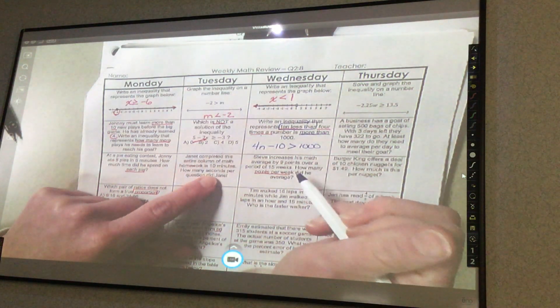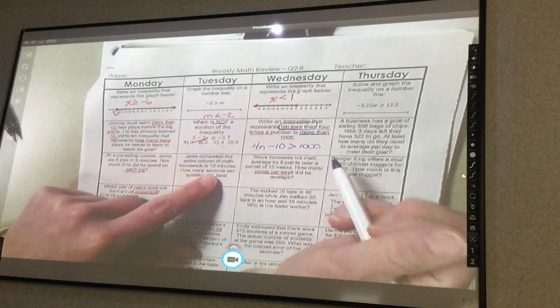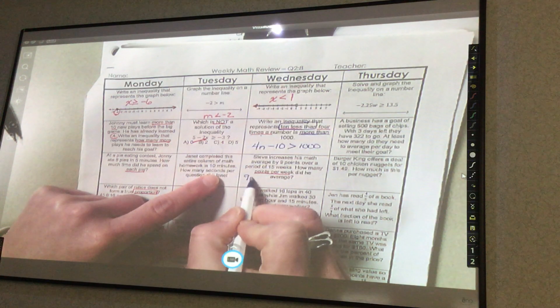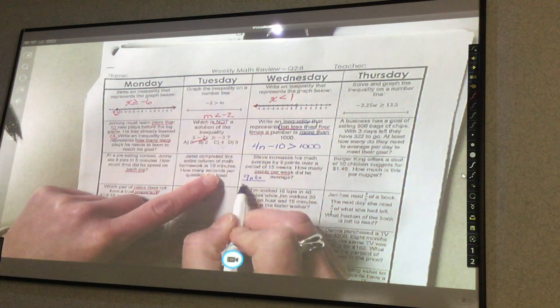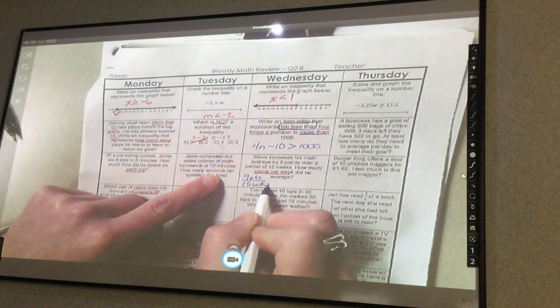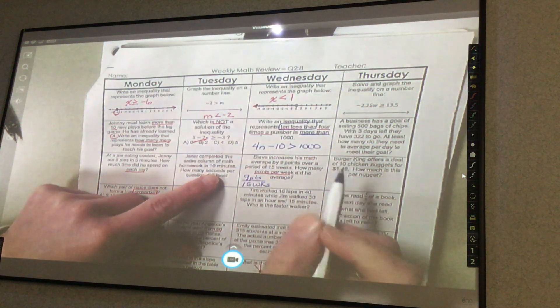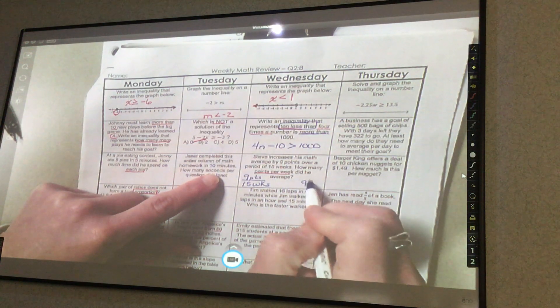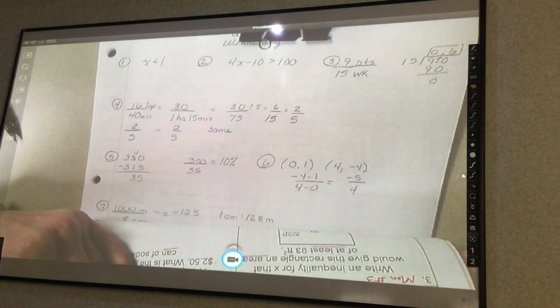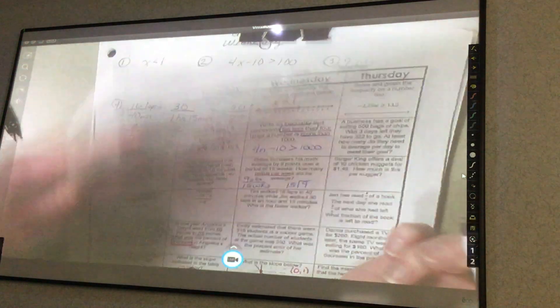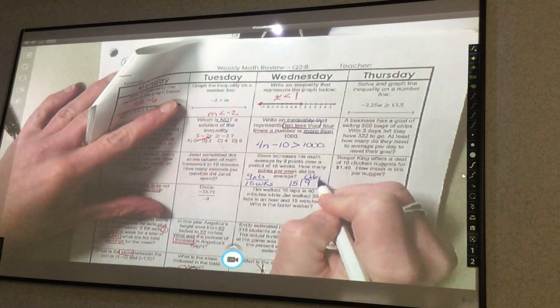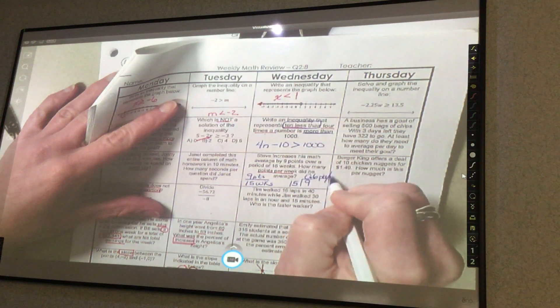Steve increases his math average by 9 points over a period of 15 weeks. How many points per week did he average? So it's 9 points per 15 weeks. We're finding the unit rate, so all you would do is 9 divided by 15. I'm going to put that in my calculator. 0.6. And then I want to label points per week.